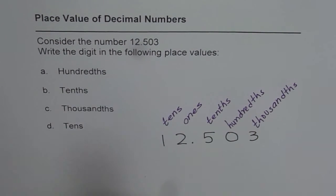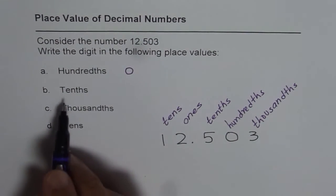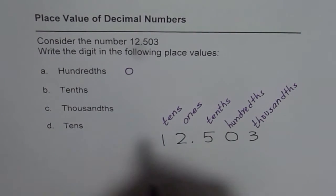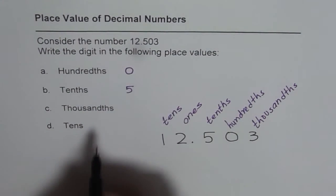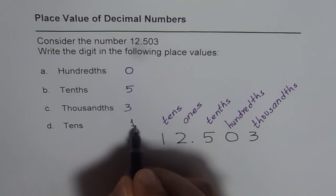So hundredths is zero, right? So hundredths place value, number is zero. Tenths is five. Thousandths is three. And tens is one.